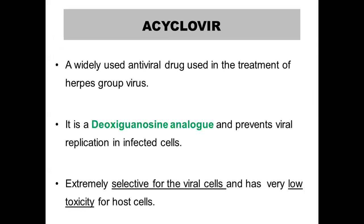Acyclovir is a widely used antiviral drug against the herpes group of viruses. It is a deoxyguanosine analog and it prevents viral replication in infected cells. It is extremely selective for viral cells and has very low toxicity for the host cells. It is one of the drugs which is very well tolerated because it doesn't have any toxicity for the host cells.